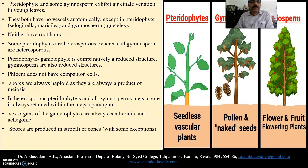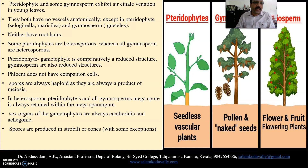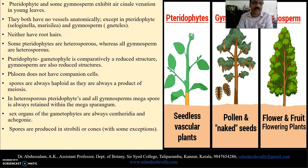Pteridophytes and some gymnosperms exhibit open dichotomous venation — that is venation similarity. They both have no vessels anatomically, except in pteridophytes like Selaginella, Marsilea, and gymnosperms. It is an anatomical relation. Neither have root hairs.